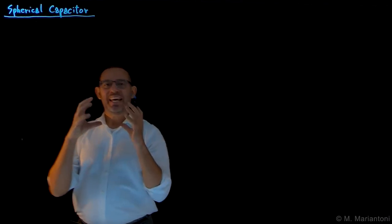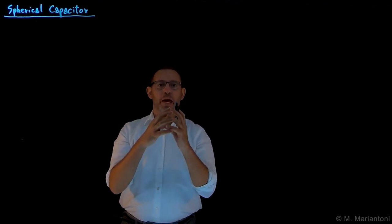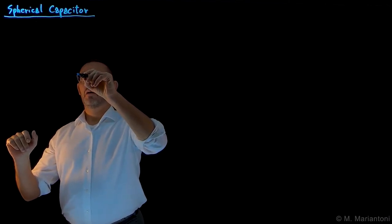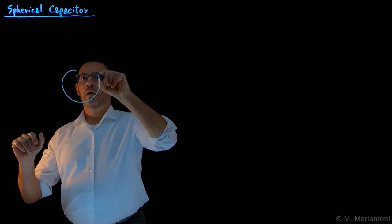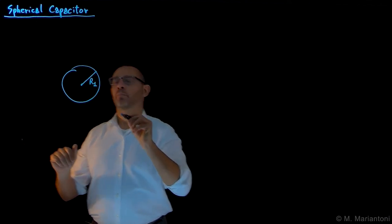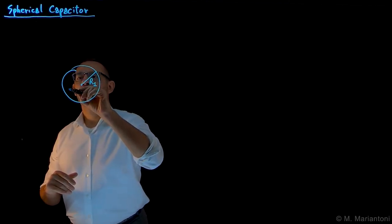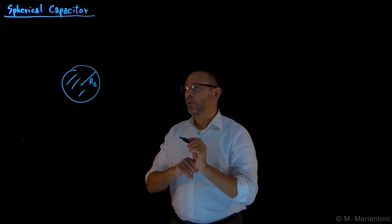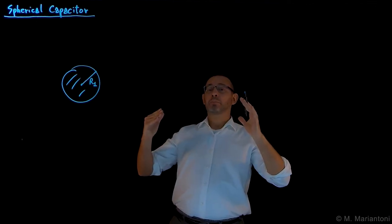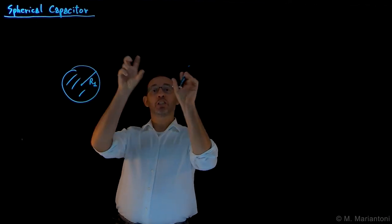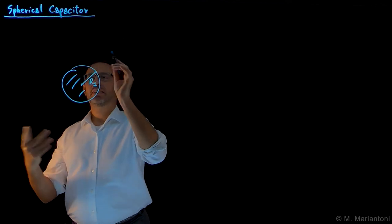It's comprised of an inner hard sphere made from a perfectly conducting material. This sphere is characterized by a radius capital R1 — it's a hard sphere, so there is conducting material everywhere. Then there is a vacuum gap, and at a distance capital R2, there is the inner surface of a shell, also perfectly conducting material, with some thickness T.